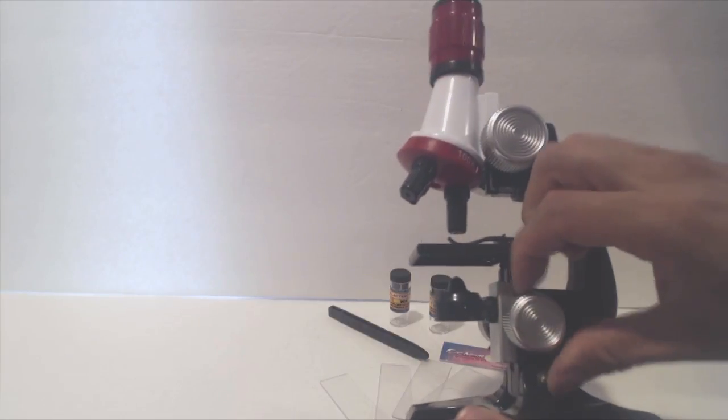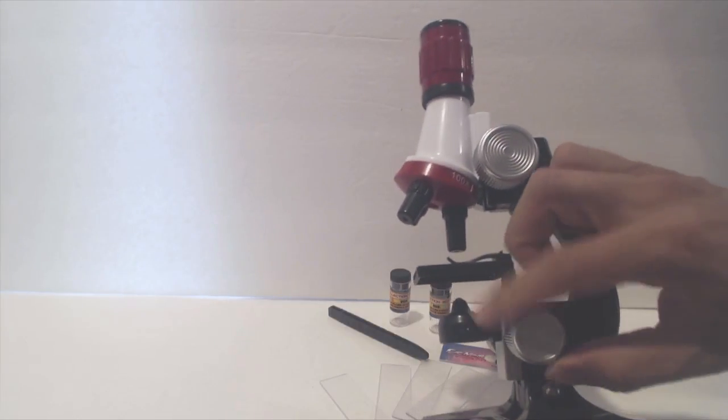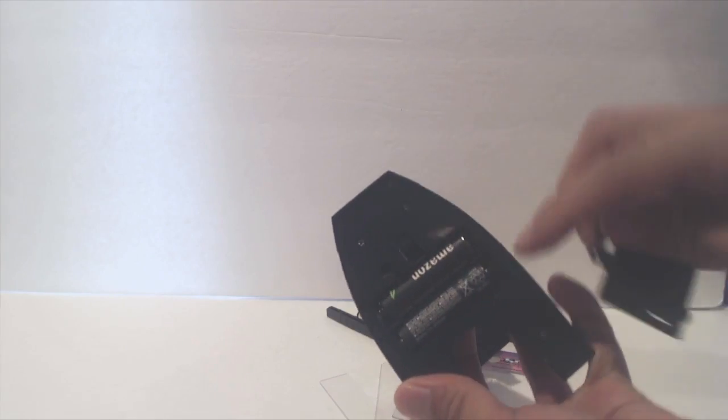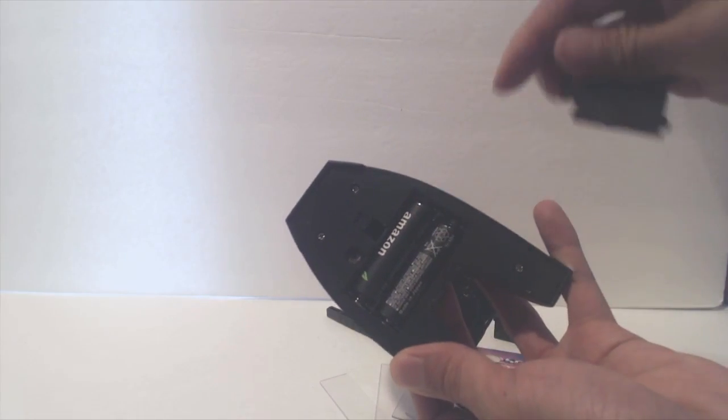To move the light higher and lower and adjust its intensity, scroll the small knob near the bottom. This microscope requires two AA batteries, which are not included, to power the LED light.